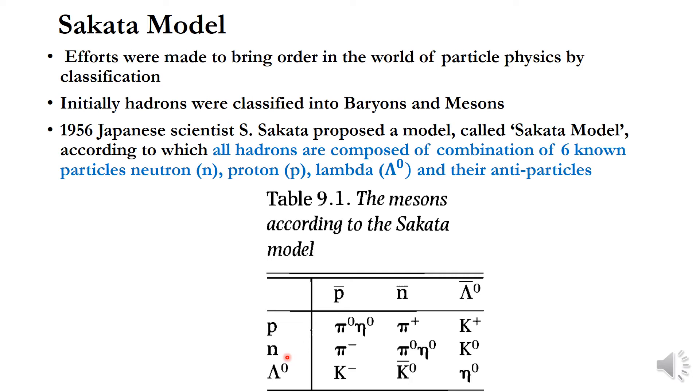Similarly the eta zero is a combination of N, N bar and lambda zero, lambda zero bar according to Sakata model. So this is the way of formation of different mesons according to Sakata model.